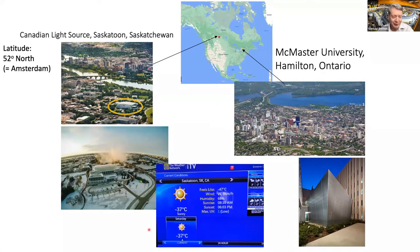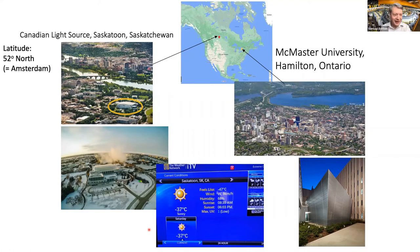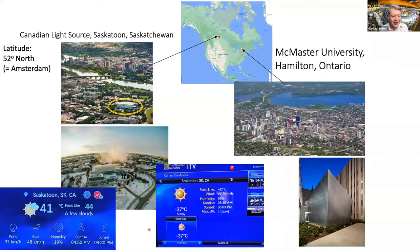Early February we had minus 37, peaking at minus 39, with a wind chill factor of minus 51. And just last week we were hit by a heat wave in Saskatoon, as shown on the weather channel temperature.